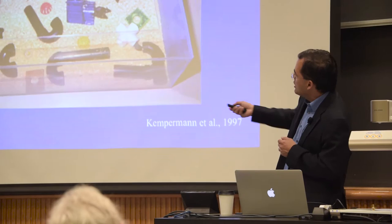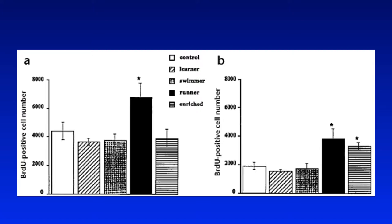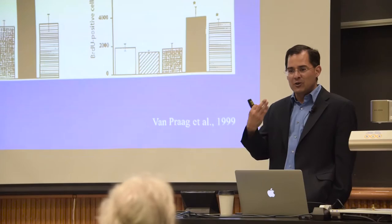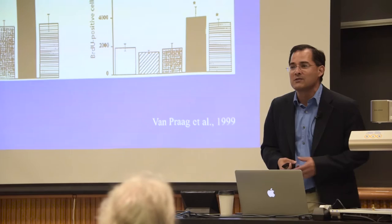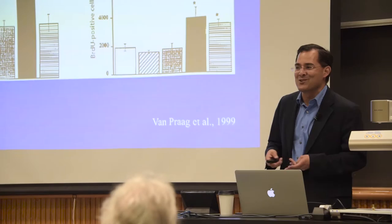Investigators began to dissect what exactly within environmental enrichment was responsible for this increase in newborn neurons. They put animals in environments where they could learn; they forced animals to exercise by putting them in a pool; they offered animals voluntary exercise with a running wheel. They found that voluntary running was responsible for this effect — if animals were forced to exercise, it had no benefit, but if they were offered the ability to exercise, it actually doubled the number of newborn neurons. Henriette van Praag, when she made this discovery, quite literally went out and bought a pair of Nikes and started jogging.